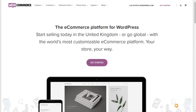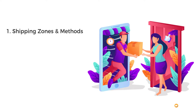Let's break down what the three key stages are of setting up your shipping with WooCommerce. The first is shipping zones and methods. A shipping zone is basically where you want to ship your product to — for example, it could be a country, a state, or right the way down to a postcode. We have to make sure we set up all those that are relevant to the shipping methods.